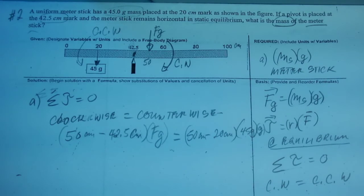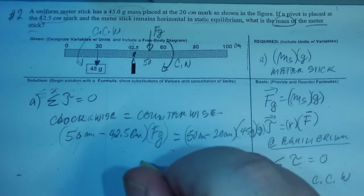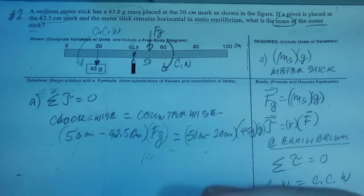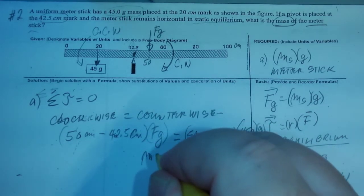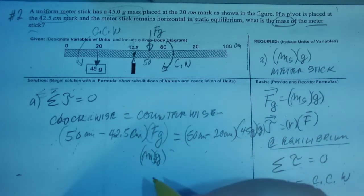And the force, or the weight is 45 grams times G. Okay. Now, just a reminder that this is actually equal to M times G. M_S, the mass of the meter stick times G.